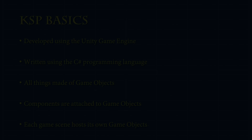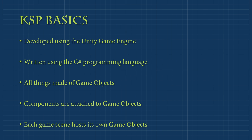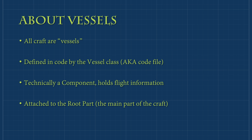A prefab is a Unity object similar to a master object. It doesn't exist in a game scene, but instead serves as a blueprint for game objects to be created from. All craft in KSP are divided into vessels in the game code. Vessels are defined by a code class called Vessel, which is technically a component but think of it as a container. The Vessel class holds a craft's information such as situation and speed, and a list of the craft's parts. In the flight scene, the Vessel class is attached to the game object considered to be the vessel's root part — the main part to which all other parts are attached, typically the first part placed by the player.